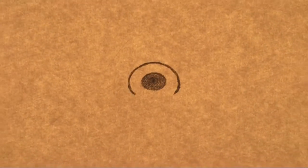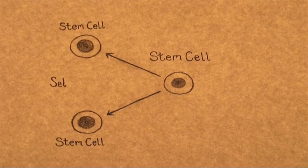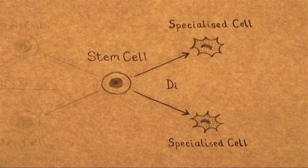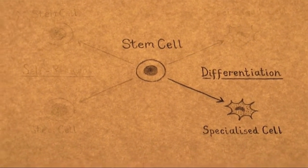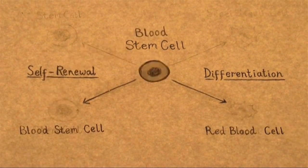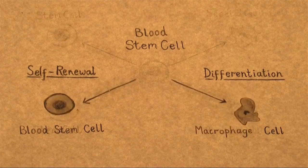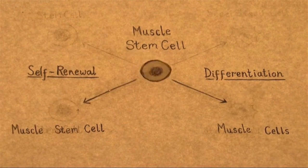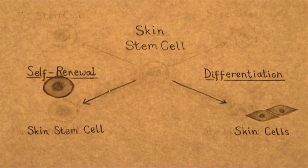Wir müssen ständig neue Stammzellen machen, denn wenn wir keine mehr haben, können wir auch keine spezialisierten Zellen mehr herstellen. Bei jeder Zellteilung muss sich die Stammzelle also entscheiden, ob ihre beiden Tochterzellen neue Stammzellen oder neue spezialisierte Zellen werden sollen. Stammzellen im erwachsenen Gewebe können normalerweise nur den Zelltyp des jeweiligen Gewebes produzieren. Hautstammzellen können also Hautzellen herstellen, aber keine Blutzellen und umgekehrt.